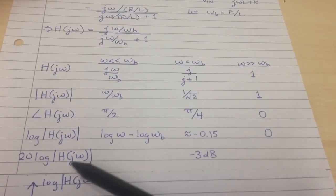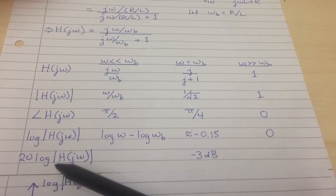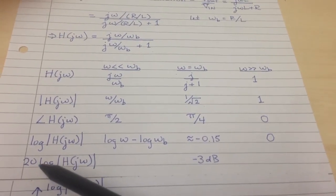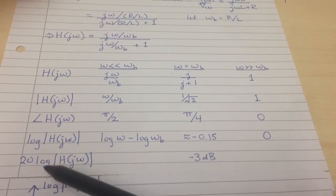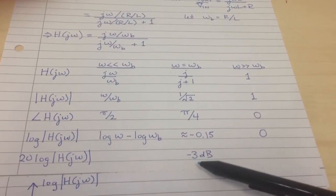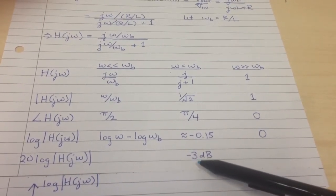Now, by convention, when people look at this logarithm, they typically multiply it by 20 when they're dealing with voltages, multiply it by 10 when they're dealing with powers. If you multiply it by 20, you get minus 3 dB.